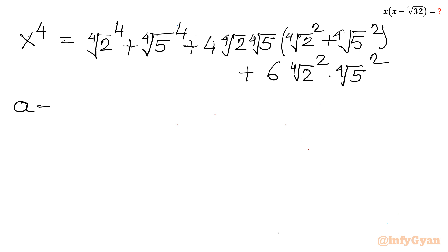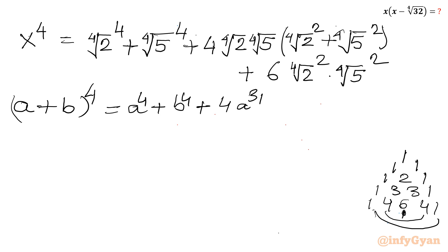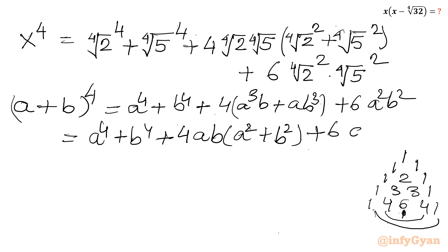Now I will write the binomial expansion formula for (a + b)⁴. Using Pascal's triangle method, the coefficients are 1, 4, 6, 4, 1. I will club the 1s and 4s together and consider 6 alone. So the formula becomes: a⁴ + b⁴ + 4ab(a² + b²) + 6a²b². Here 4ab is taken common from the middle bracket giving a² + b², and the last term is 6a²b².